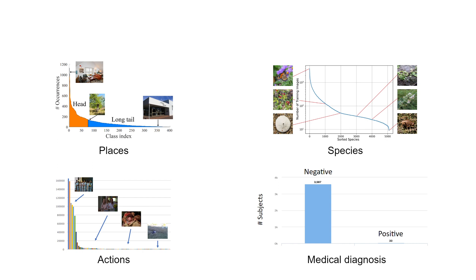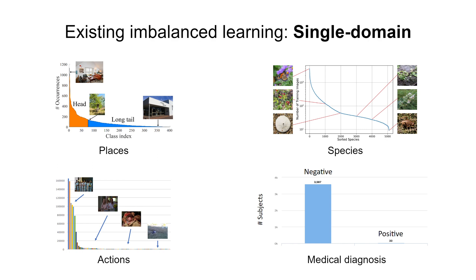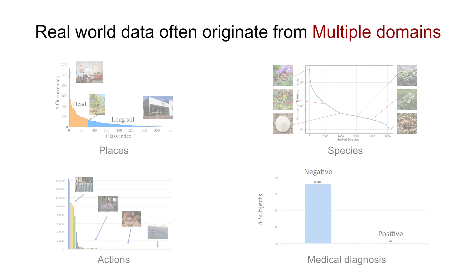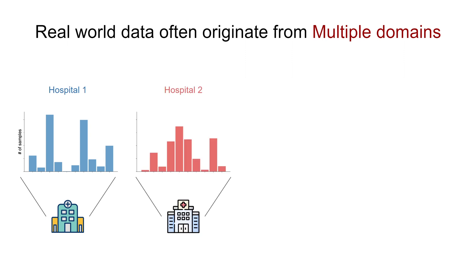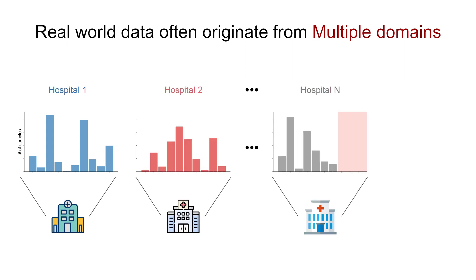As we may all know, data imbalance is very common in the real world, including many datasets with different attributes such as places, actions, spaces, and even critical applications like medical diagnosis. But existing studies on data imbalance focus on single domain settings, where the samples are drawn from the same data distribution. However, data for the same task can originate from multiple distinct domains. For example, data for classifying certain diseases can originate from one hospital, but we can also obtain data from a second hospital and even more hospitals.